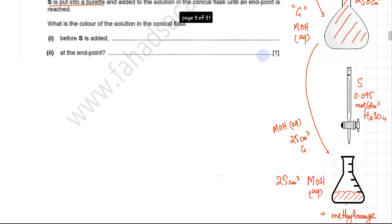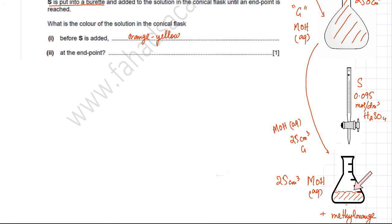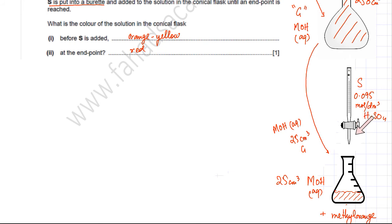For part C, we need the color change of methyl orange before S is added and at the endpoint. Before S is added, the flask contains MOH which is alkaline, so methyl orange is orange-yellow. As sulfuric acid is added and the solution becomes acidic at the endpoint, methyl orange turns red — that's when the titration should be stopped.